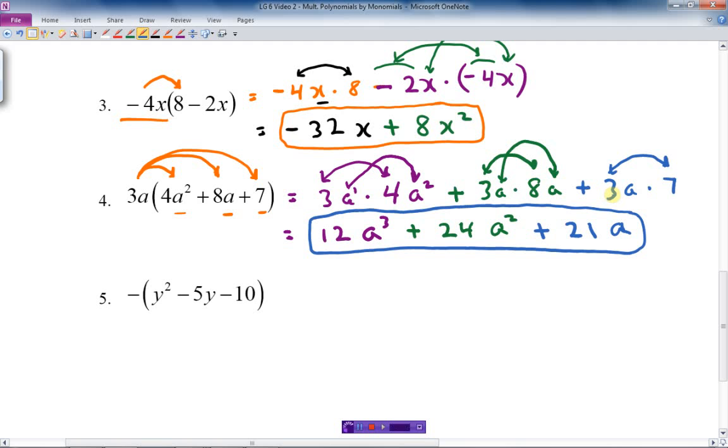Number five is a little bit different. Let's pay attention carefully. We've got this negative in front. What does that mean? It's kind of like there's an invisible one here, like negative one in front of this thing. Negative one times y squared changes the sign to negative y squared. But don't forget, you have to also change the sign on the next term. Negative one times negative five y is positive five y. Lastly, negative one times negative ten is plus ten.